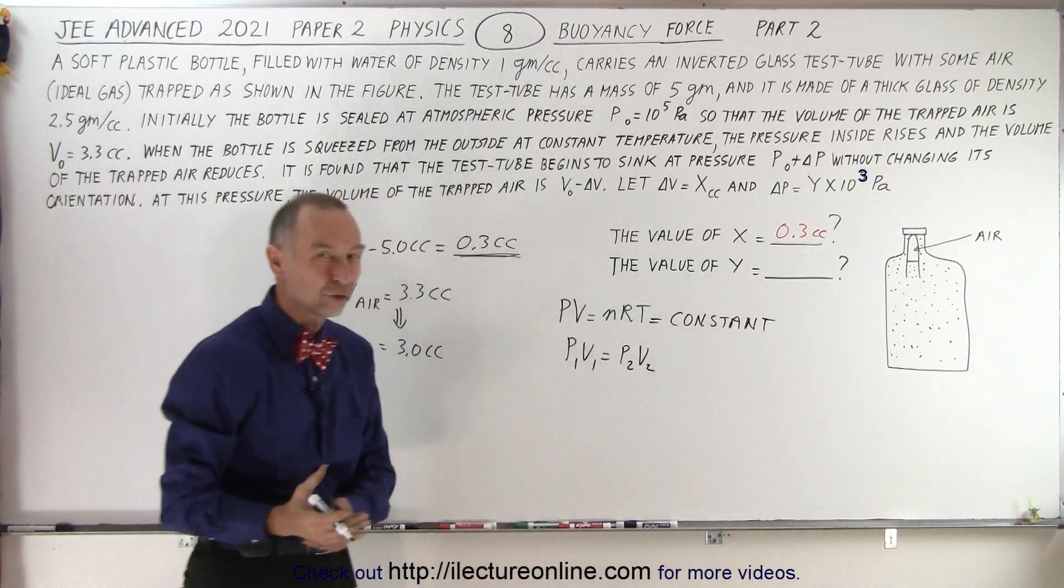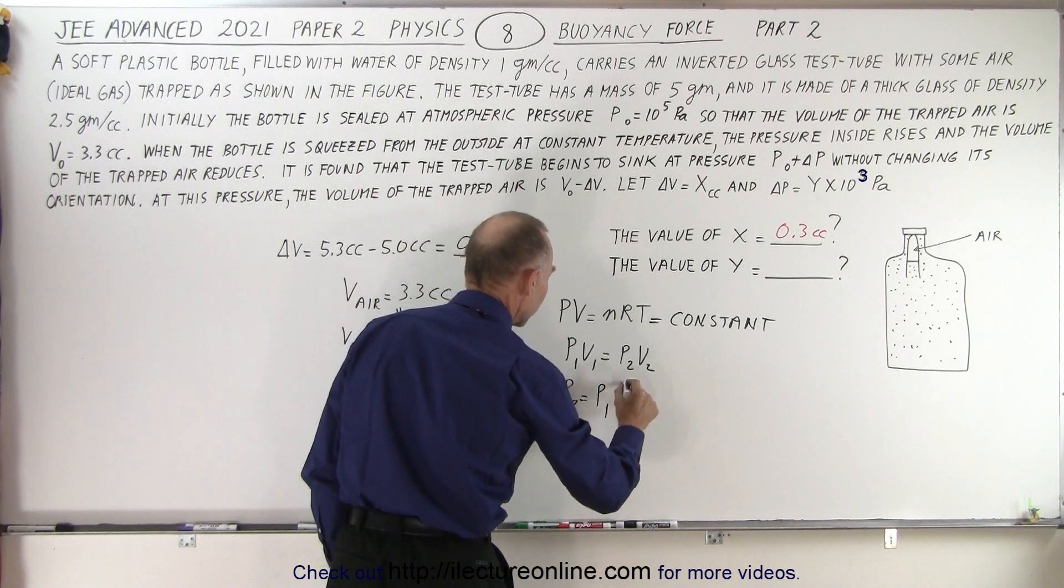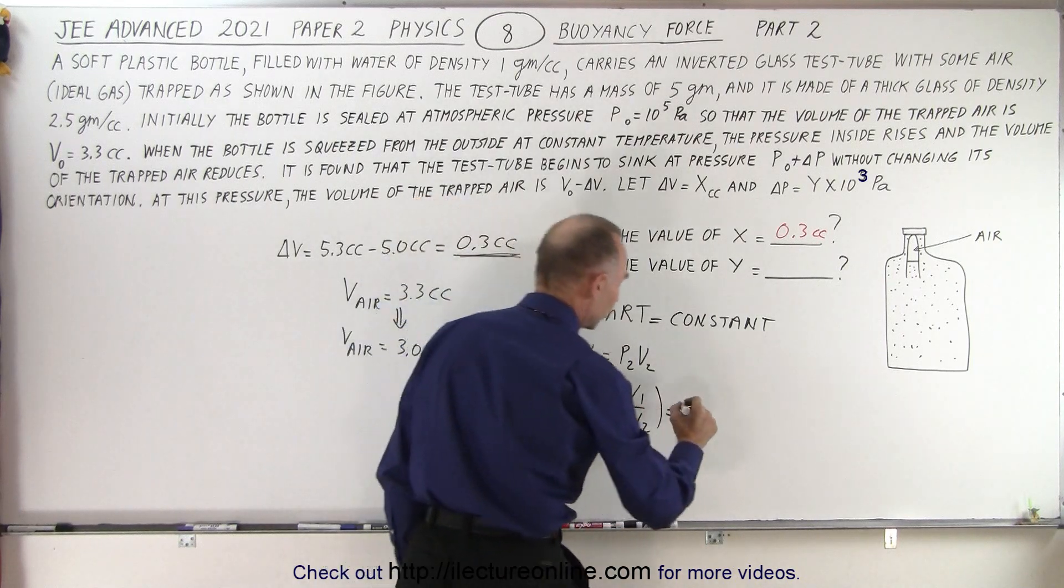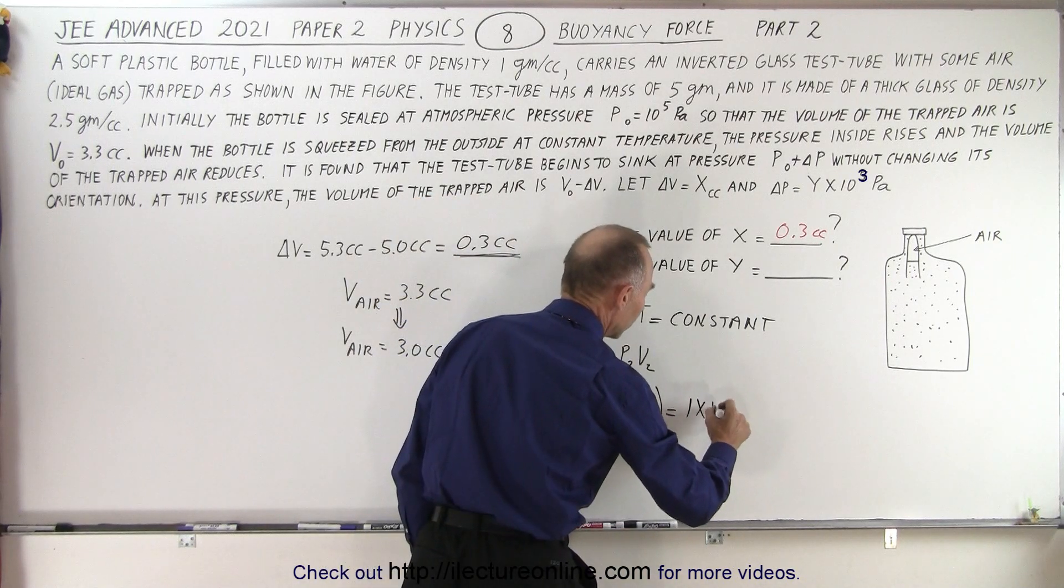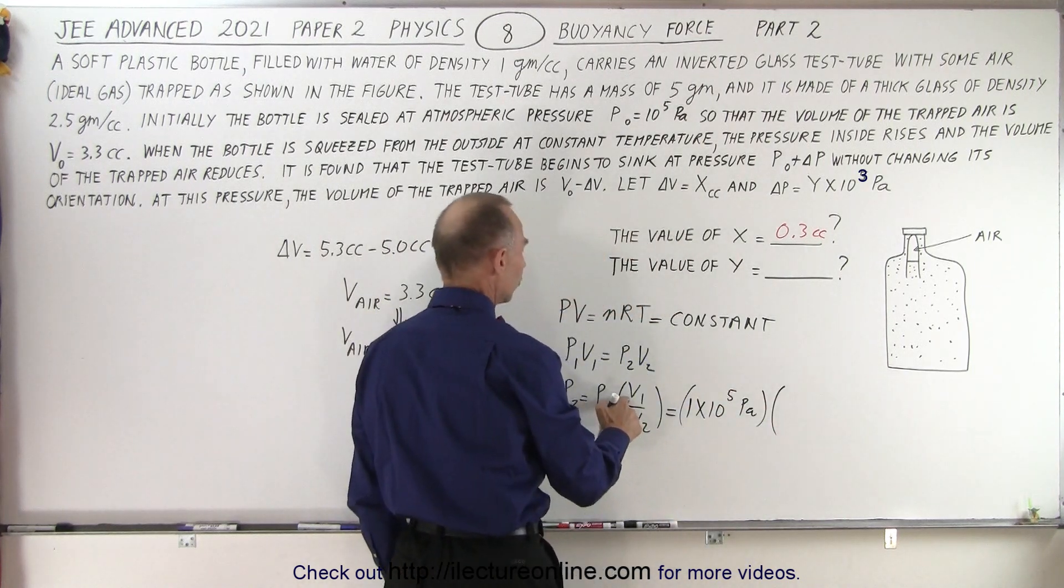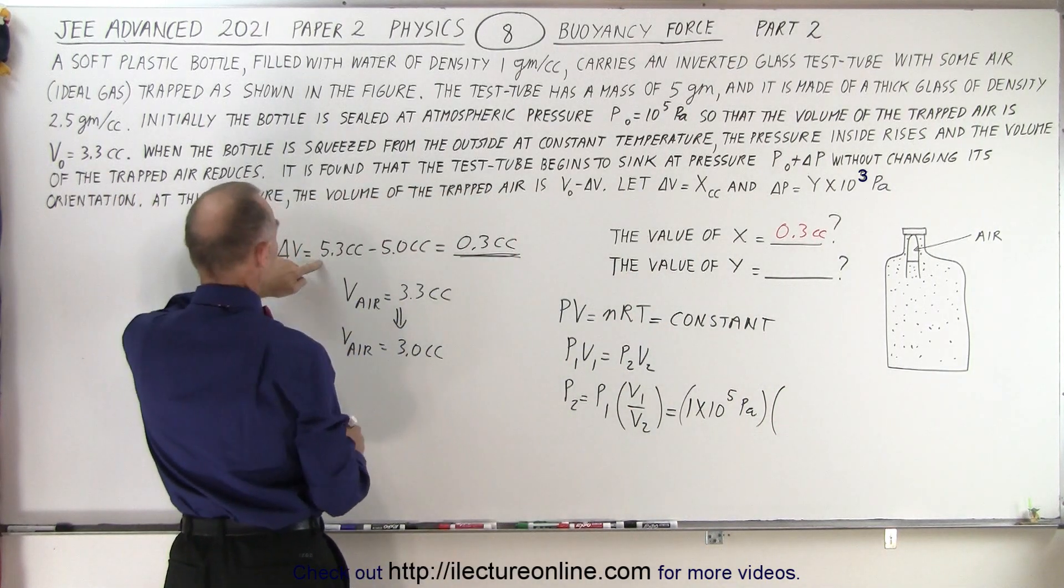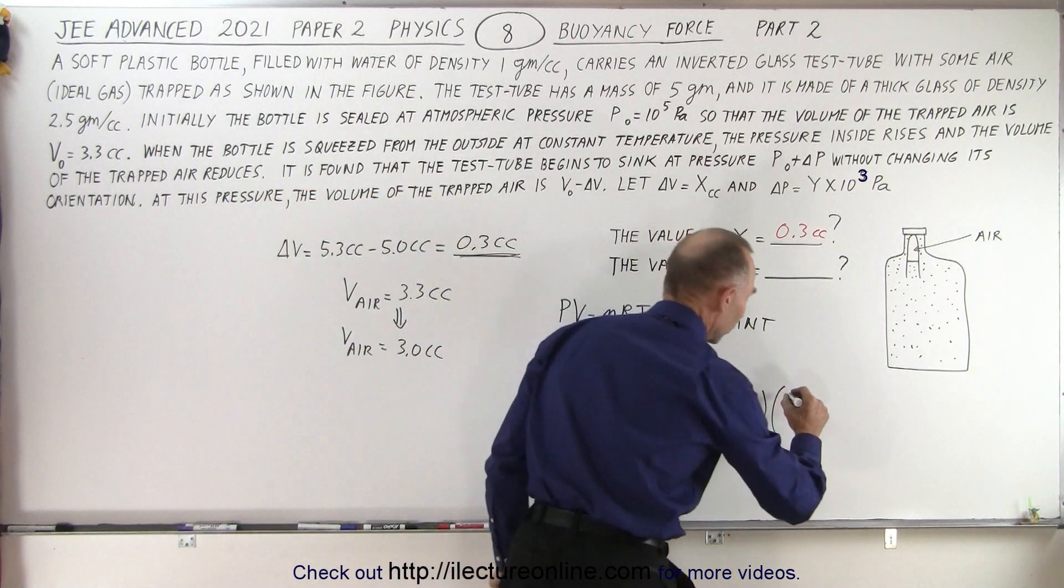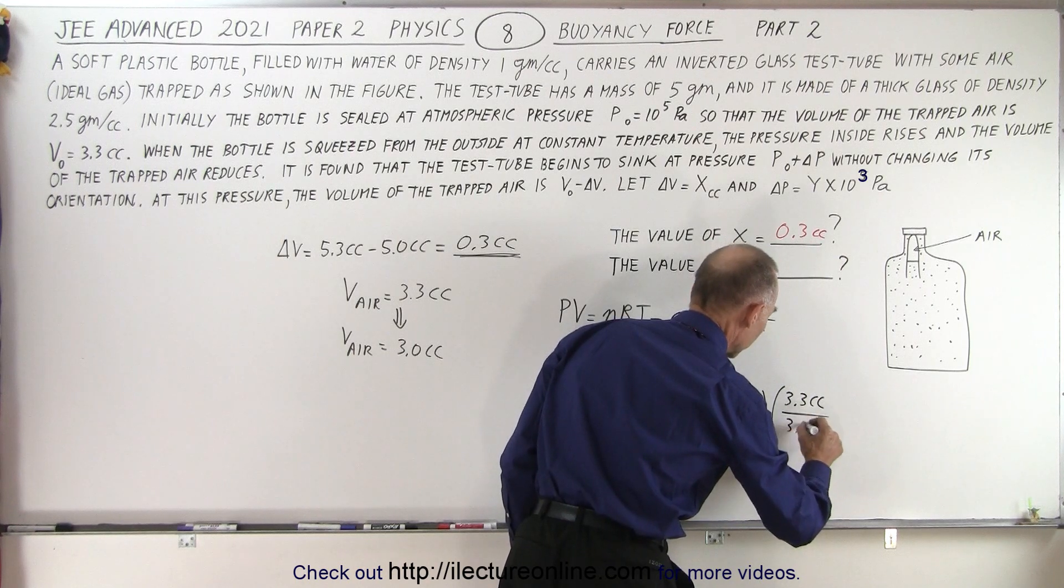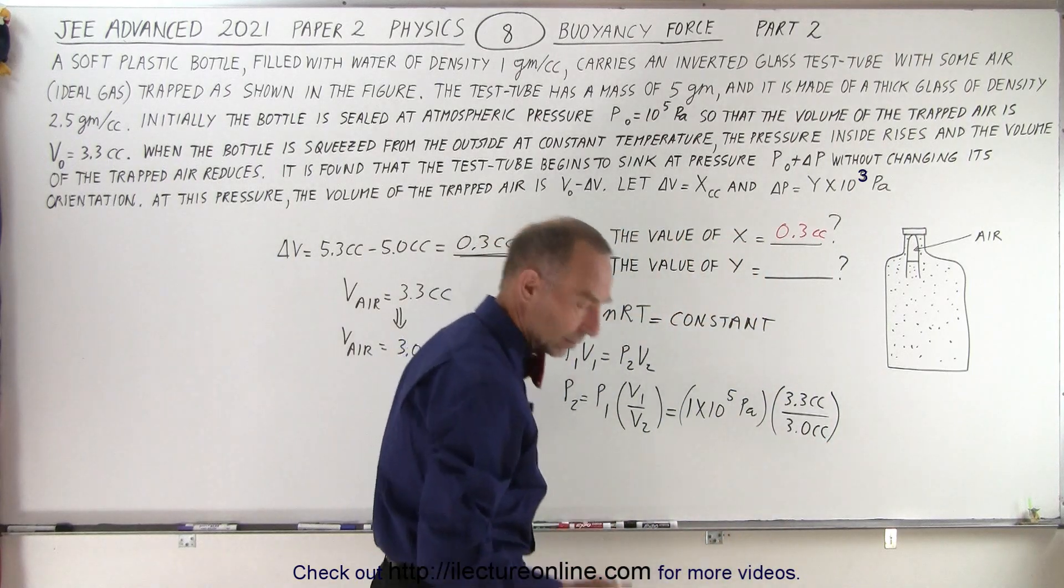What we're looking for is the new pressure, that means that P2 is equal to P1 times the ratio of V1 over V2. So here we started with the initial pressure of 1 times 10 to the 5th pascals and the volume, the initial volume was 3.3 cc's. The other two was the volume of the glass.